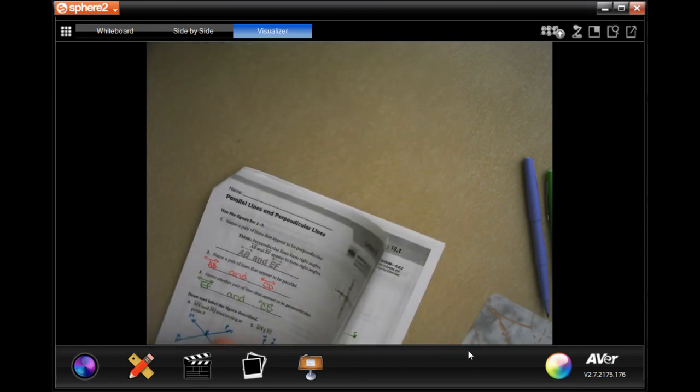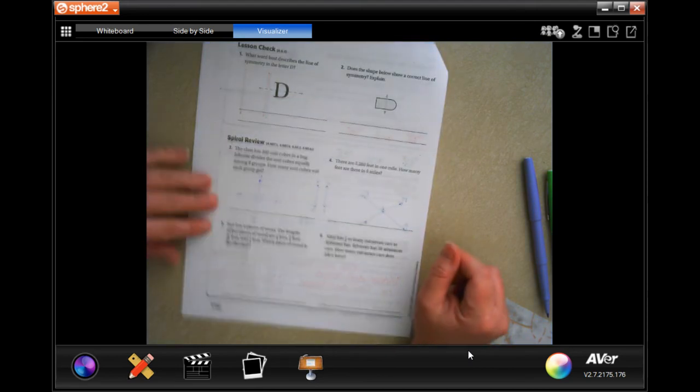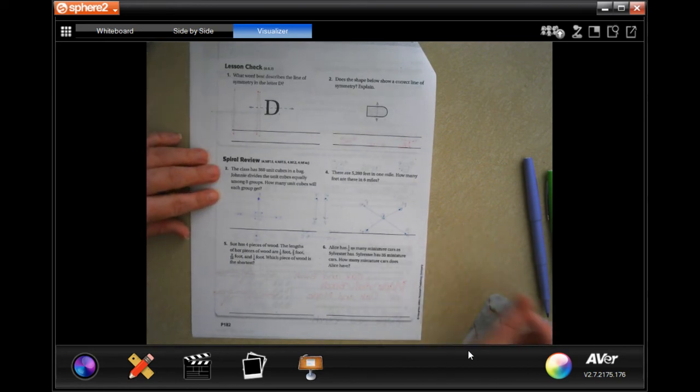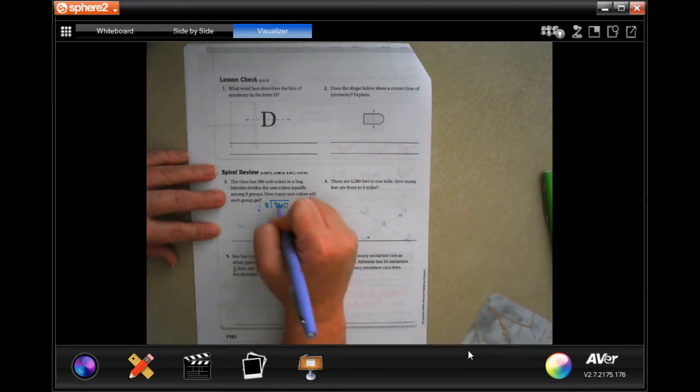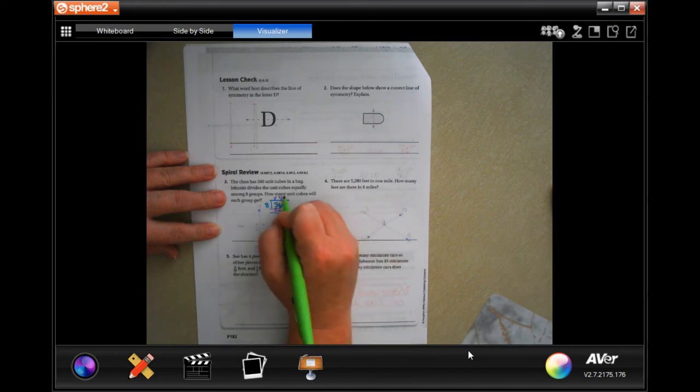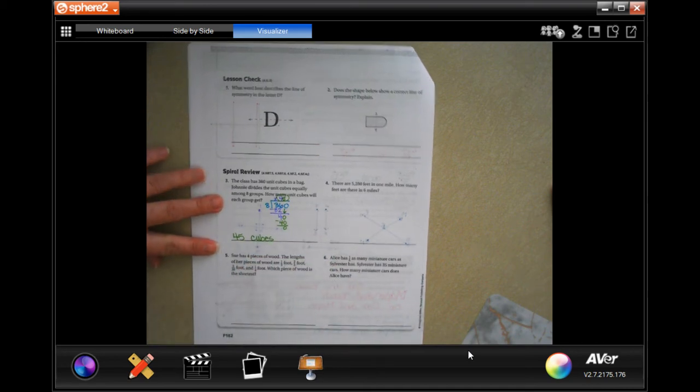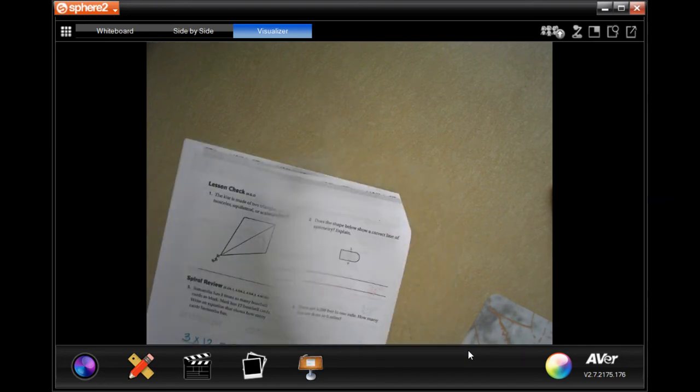Now we're going to go on to the back where you guys are going to do the lesson and check just like always. And we're going to go down to this bar of our view. It says the class has 360 unit cubes in a bag. Johnny divides the unit cubes equally among eight groups. How many unit cubes will each group get? So let's do 360 divided by 8. Eight's not going to go into 3, but it'll go into 36 four times. Four times eight is 32. We subtract, we get 4. Four is smaller than eight, so I'm going to bring down my zero. Eight goes into 40 five times. Five times eight is 40. Subtract, get zero. So 45 cubes.